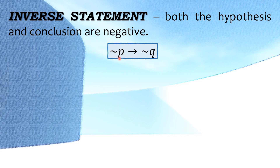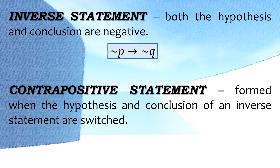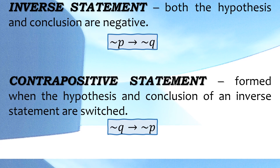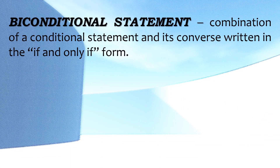So ganito yung ginagamit nating symbol when we are using the inverse statement — that will become negative P, then negative Q. And then ang kabaliktaran naman ng inverse statement ay yung contrapositive statement. It is formed when the hypothesis and conclusion of an inverse statement are switched, so: negative Q, then negative P. And the last is the biconditional statement — combination of a conditional statement and its converse, written in the form 'if and only if'. So ito naman yung magiging symbol ng biconditional statement.